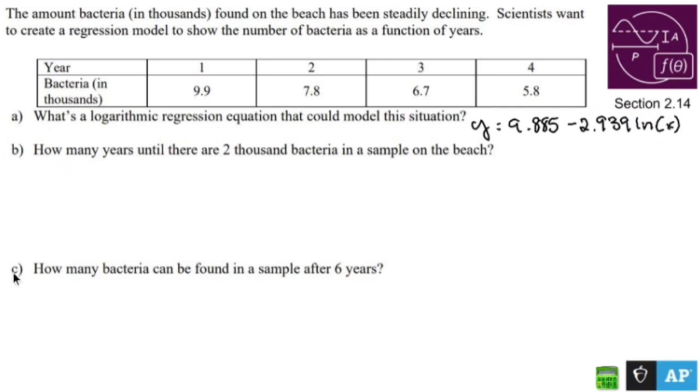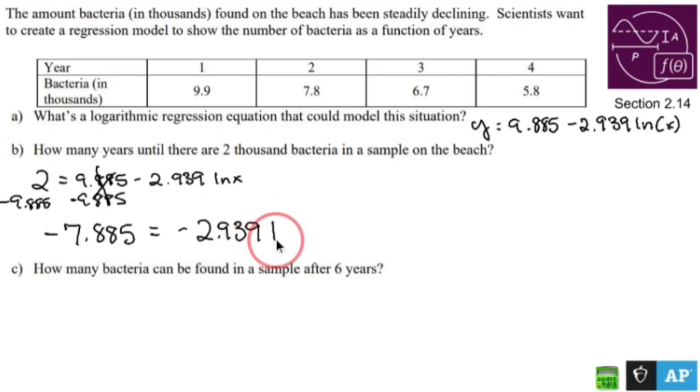Now, I'm going to use that for B and C. C is actually a whole lot friendlier than B, but that's not the order that we have. B says how many years until there's 2,000 bacteria, which means we're solving for X, and we're going to let Y equal 2. So let's do that. 2 equals 9.885 minus 2.939 LN of X. I'm going to subtract both sides by 9.885. Don't need a calculator quite yet. I can handle this one.